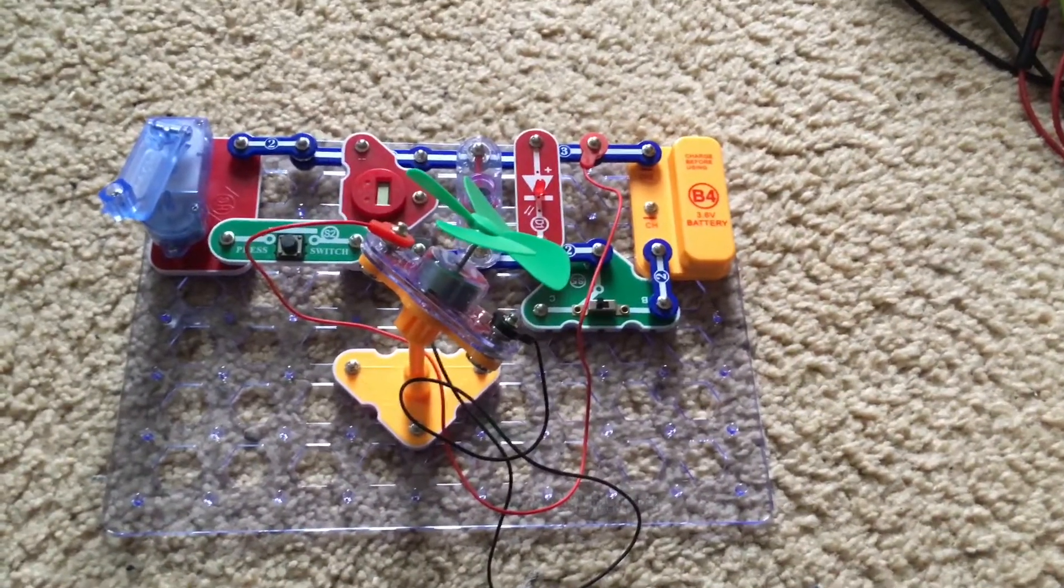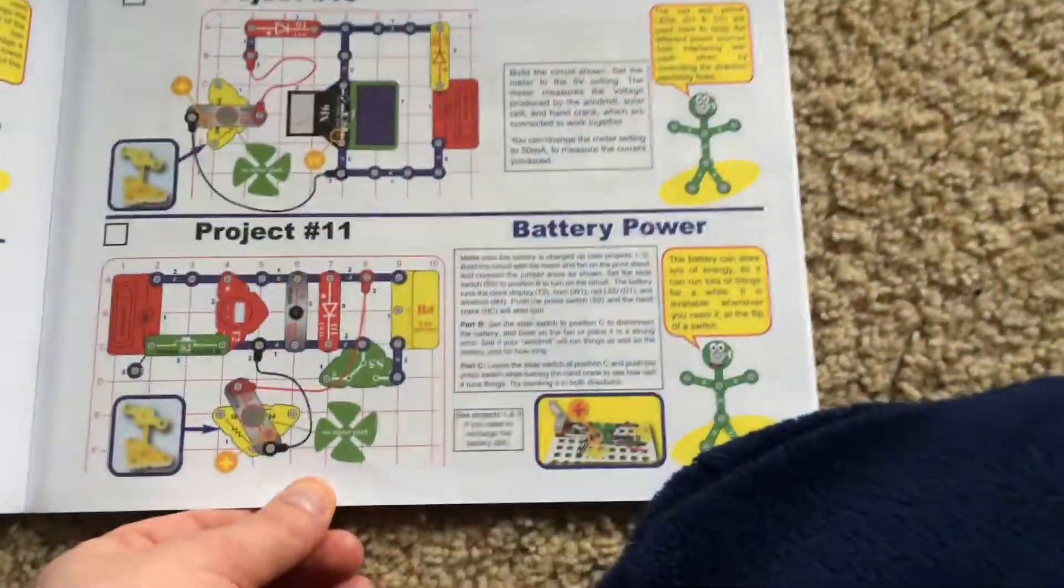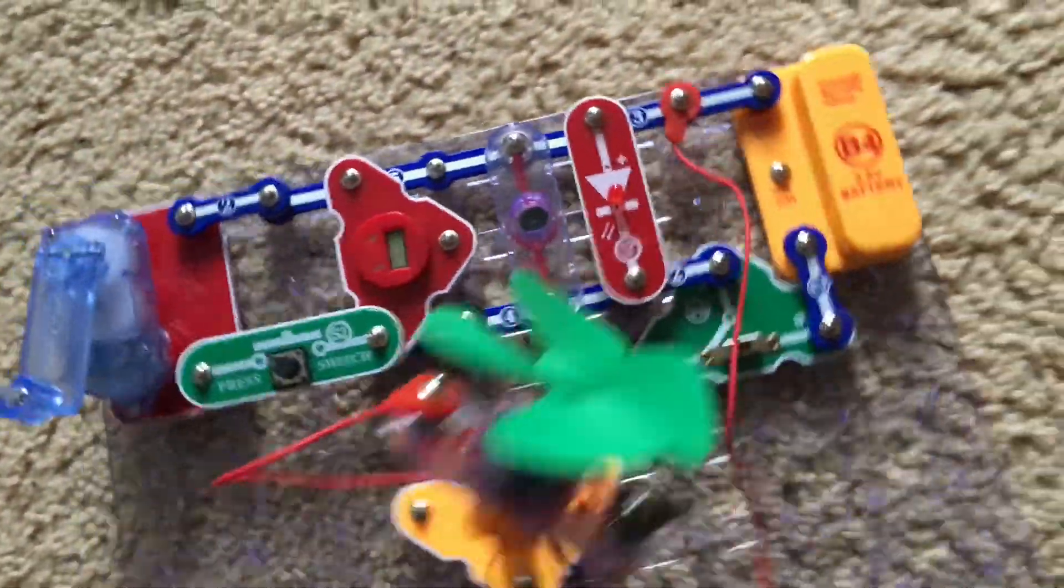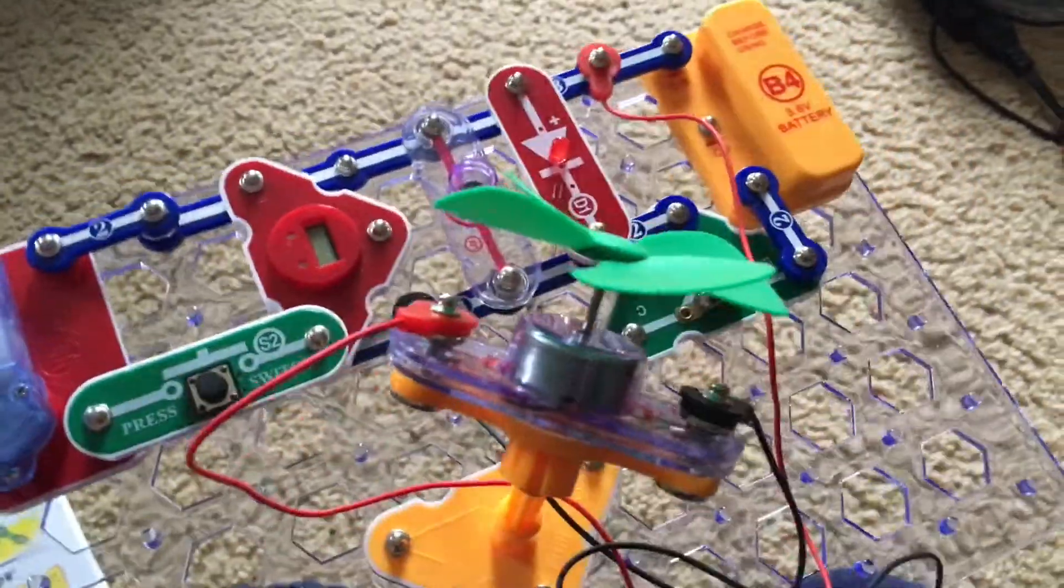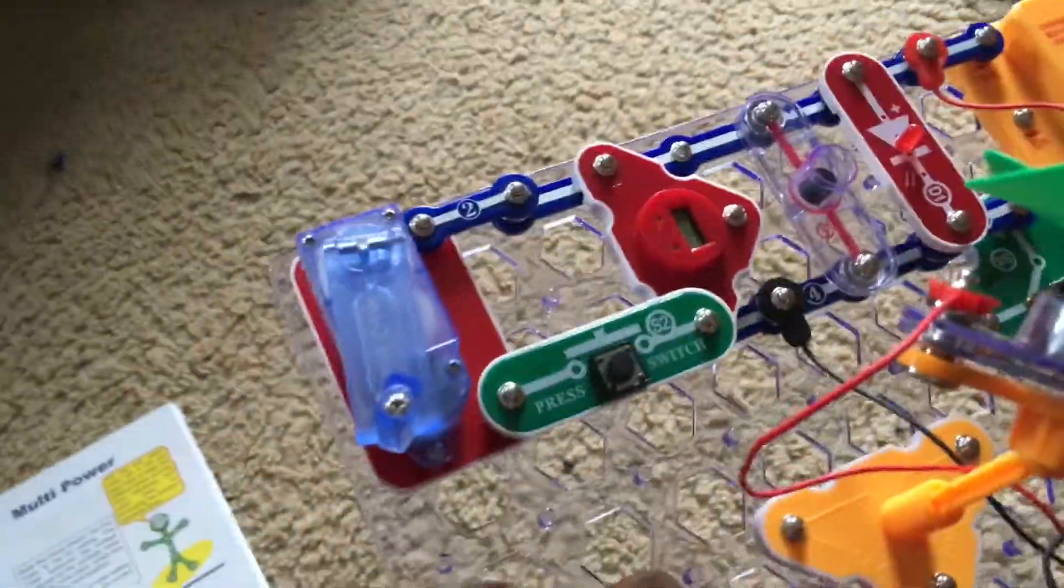Project 11, battery power. We will use this circuit which includes the horn, red LED, clock, motor with fan, and hand crank.